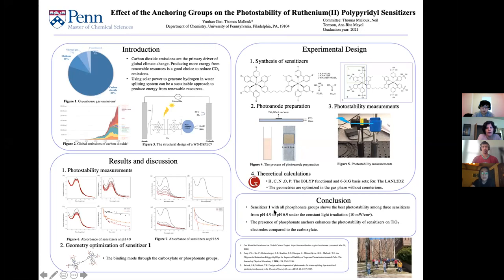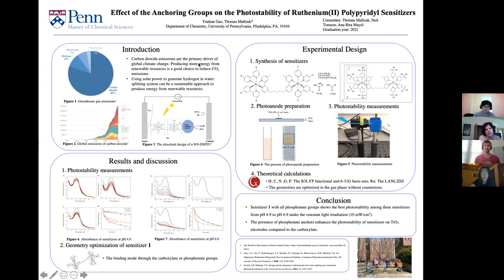In conclusion, sensitizer 1 with all phosphonate groups shows the best photostability among the three sensitizers from pH 4.9 to pH 6.9 under constant irradiation, and phosphonate anchors can enhance photostability on TiO₂ electrodes. My future direction will include measuring the photoinjection yield from the sensitizer's excited states to the TiO₂ conduction band, because photoinjection yield is another important factor determining the overall performance of my sensitizers. Thank you so much.